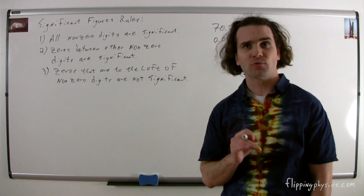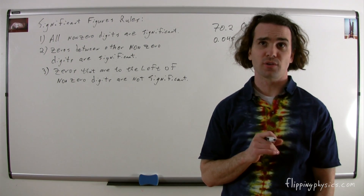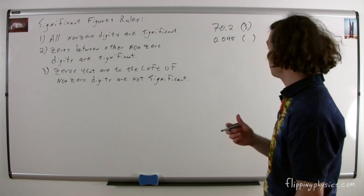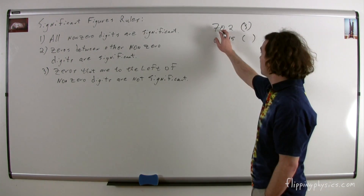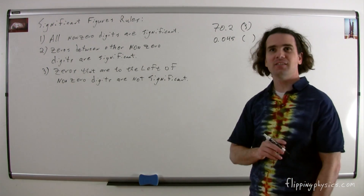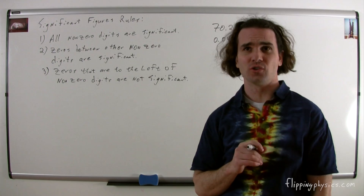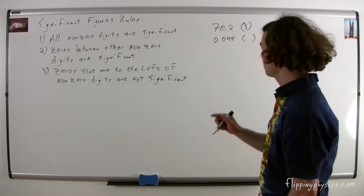Hold up. In 70.2, isn't the zero to the left of the two, and therefore not significant? Good question, Bo. Please realize that the second rule trumps the third. Therefore, the zero in 70.2 is significant because it is between two non-zero numbers.